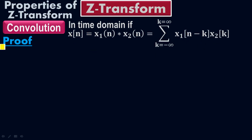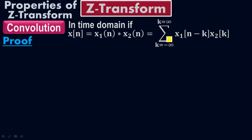We have used the time-shifting property — we have shifted N by K. The convolution of X1(N) and X2(N) equals the summation of X1(N minus K) times X2(K). For X1(N), the time-shifting property has been applied.